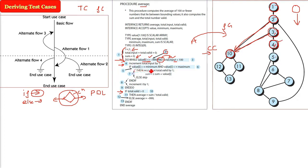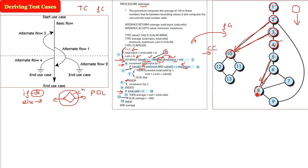Now coming to the next if statement - inside this if, we also have two conditions before and after the AND operator. It is up to you whether you want to take the if itself as a node. We are not taking the if as a node here, but if you want, you can. So your graph and my graph may be different. We are taking just the condition 'value greater than or equal to minimum' and 'value less than or equal to maximum.' When this if condition fails, it is going to go to node eight.